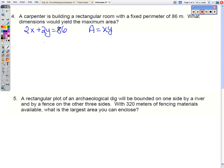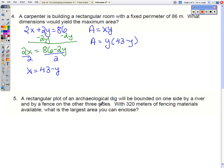I'm going to choose to solve this equation for x. I'm going to subtract the 2y. I'm going to divide everything by 2. Now I can take that and substitute it into x here.